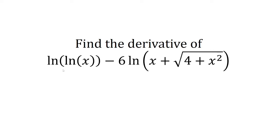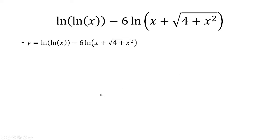Find the derivative of natural log of natural log of x, minus 6 times natural log of x plus the square root of 4 plus x squared. Let's first start off with the natural log of natural log of x. We want to take the derivative of this.